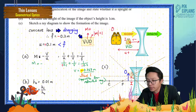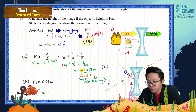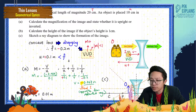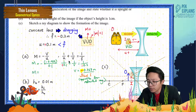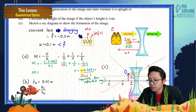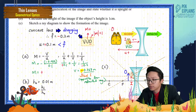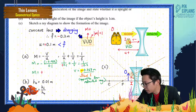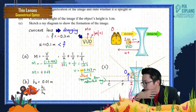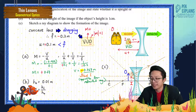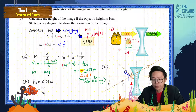Now I can find magnification. Substituting: m = −v/u = −(−0.067)/0.1. Negative times negative gives positive. So magnification = +0.67. My guess was correct — m is positive meaning upright, and the value 0.67 is less than one meaning it is a diminished image.